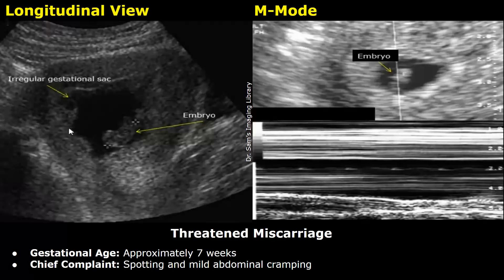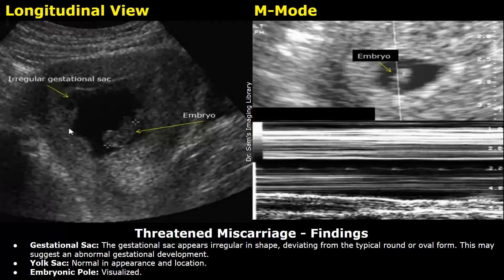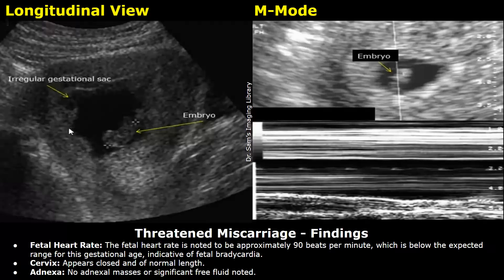These are the findings. The gestational sac appears irregular in shape, deviating from the typical round or oval form; this may suggest abnormal gestational development. Yolk sac: normal in appearance and location. Embryonic pole: visualized. Fetal heart rate is noted to be approximately 90 beats per minute, which is below the expected range for this gestational age, indicative of fetal bradycardia.